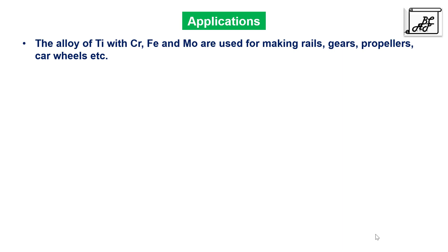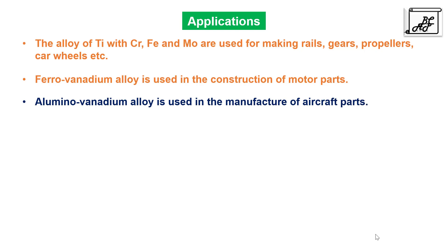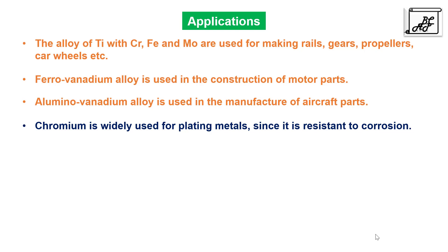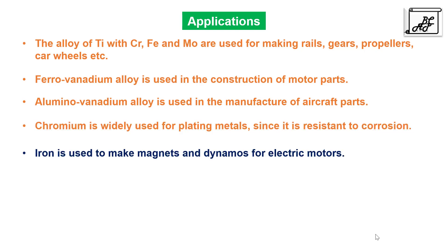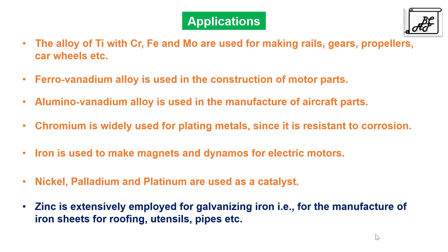There are various applications of transition metals. Alloys of titanium with chromium, iron, and molybdenum are used in making rails, gears, propellers, and car wheels. Ferrovanadium alloy is used in the construction of motor parts. Aluminovanadium alloy is used in the manufacture of aircraft parts. Chromium is widely used for plating metals since it is resistant to corrosion. Iron is used to make magnets and dynamos for electric motors. Nickel, palladium, and platinum are used as catalysts. Zinc is extensively used for galvanizing iron for the manufacture of iron sheets, roofing, utensils, and pipes.